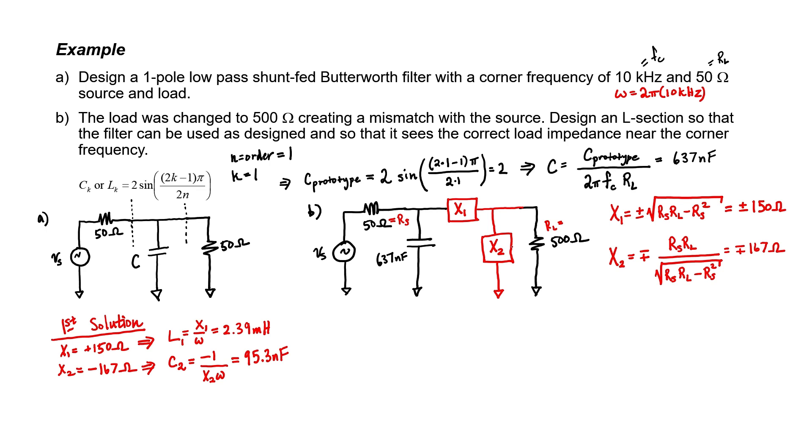How about the second solution? In the second solution reactive element one is negative, therefore it needs to be a capacitor. Reactive element number two is then the inductor. Using a similar process as in the first solution, we find that capacitor C1 would need to be 106 nanofarads and inductor L2 would have a value of 2.66 millihenries.